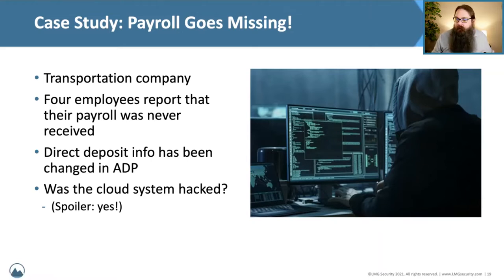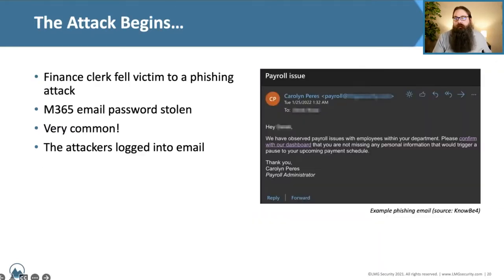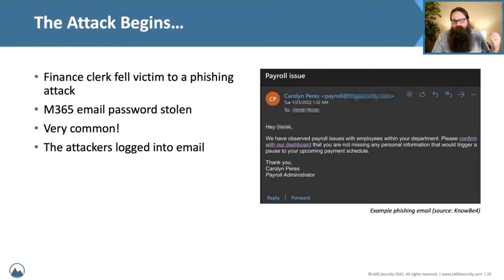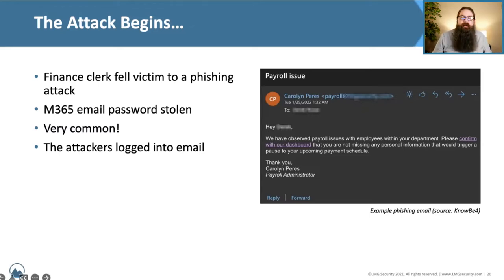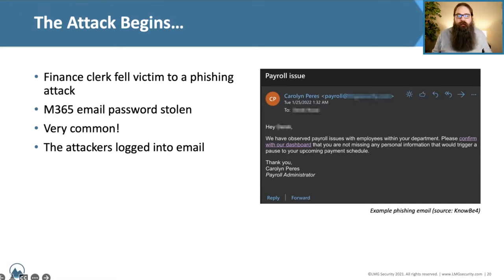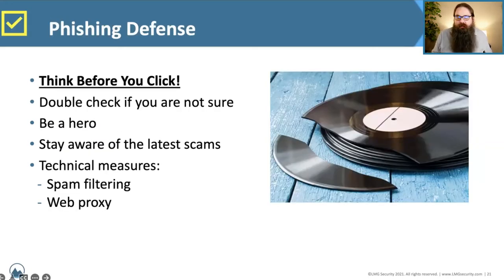Was the cloud system hacked? The spoiler is yes. The attack started pretty straightforwardly, as we see in about 85% of malware or compromise incidents: the finance clerk fell victim to a phishing attack. This took her to a lookalike Office 365 login page where she entered her email and password, and her credentials were stolen. There was no multi-factor authentication enabled on the account, so the attackers were able to log directly into the email. This was the first portion of the compromise.